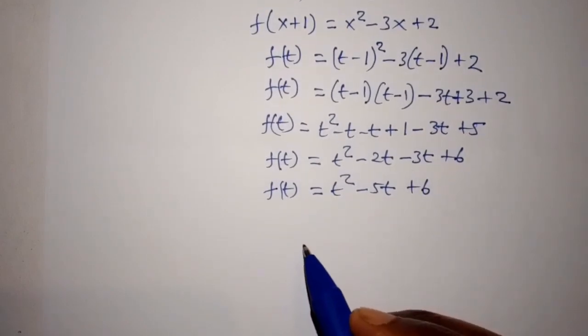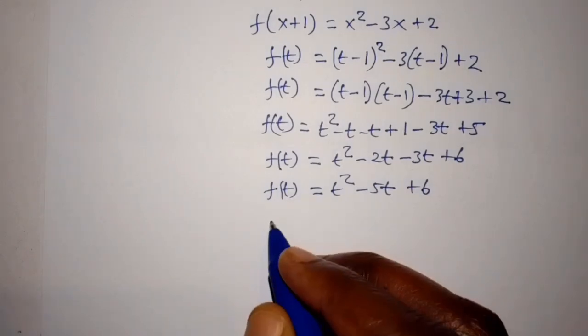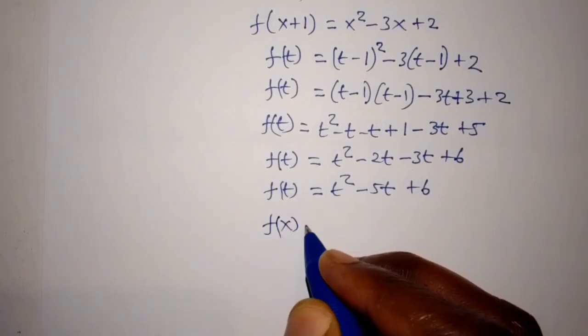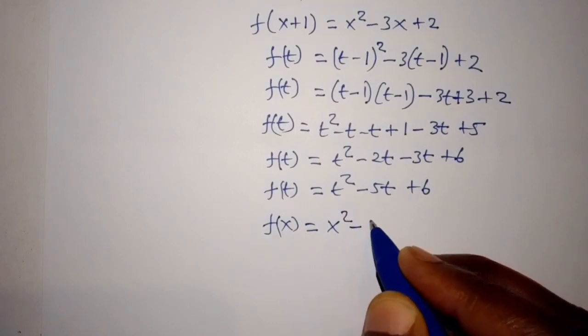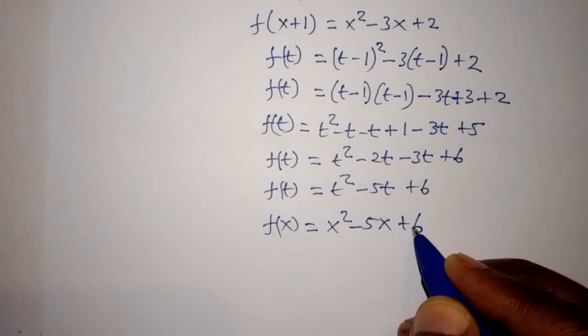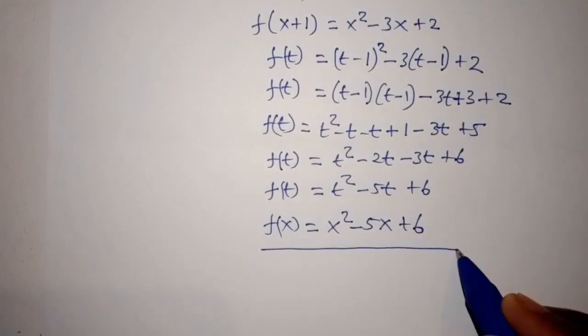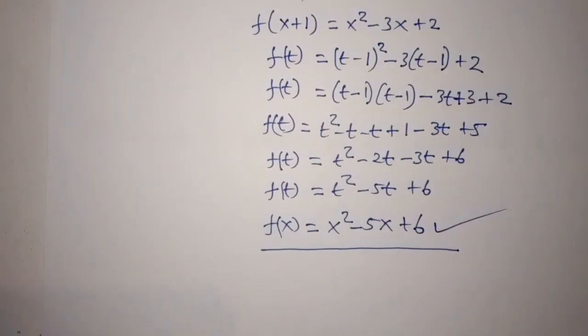Plugging in x in place of t, we have f of x is equal to x squared minus 5x plus 6. And this is our final answer. Thank you for watching.